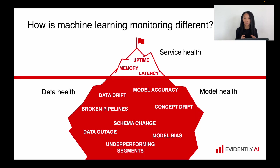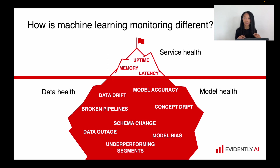When it comes to monitoring a production service, it's very important to implement service health monitoring, because we need to make sure that our service works fine. We need to monitor metrics like uptime, memory usage, latency — all these metrics help us to figure out whether our service is healthy. When it comes to machine learning models, we need to add extra layers related to data and the model itself, accounting for things like model performance, data drift, concept drift, and many more.